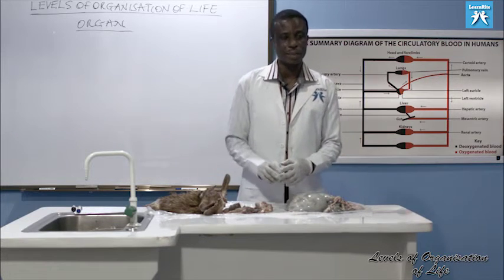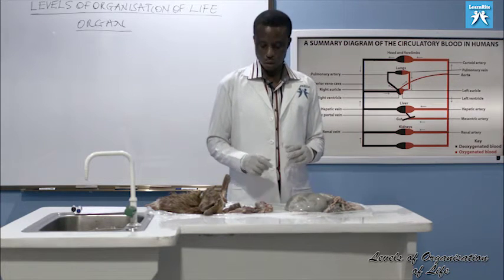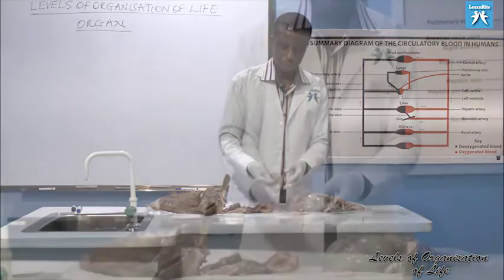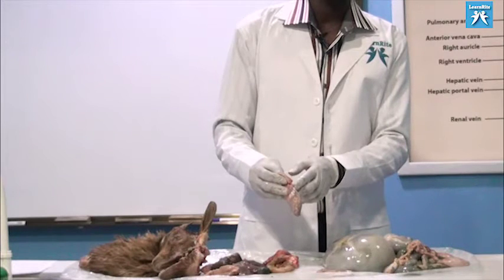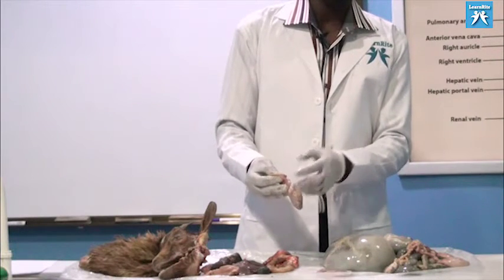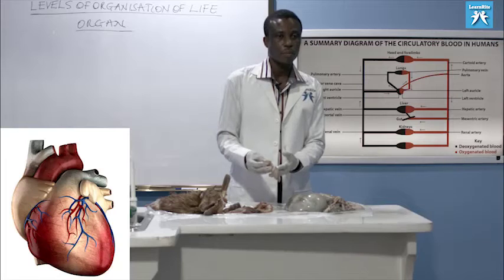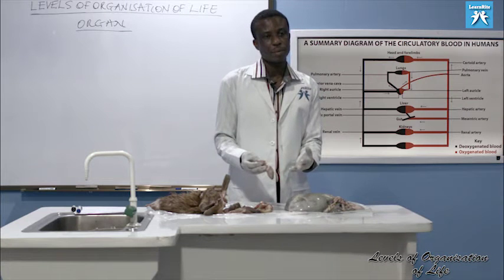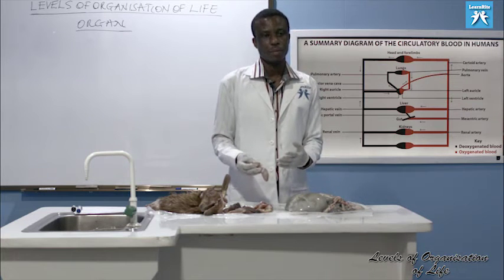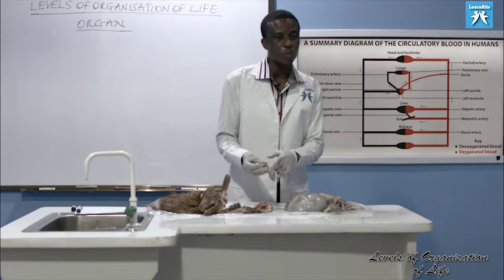We now come to the thoracic region of the goat. We will look at the heart. The function of the heart is pumping blood to all parts of the body. Blood transports oxygen that is used in respiration for energy. So the heart pumps blood.